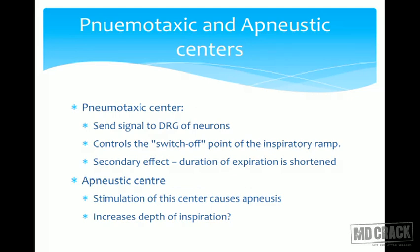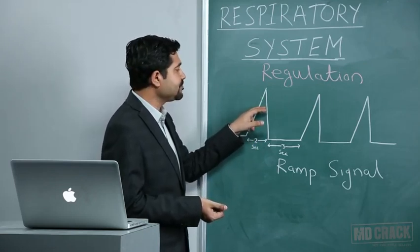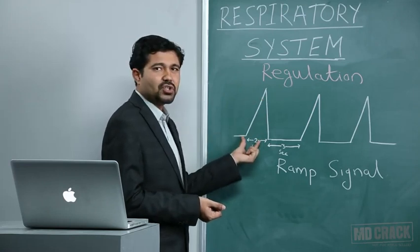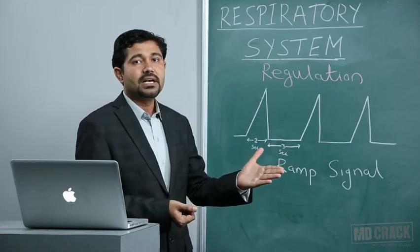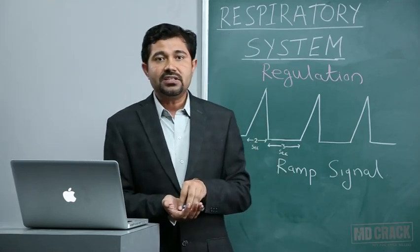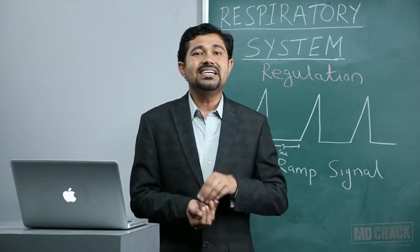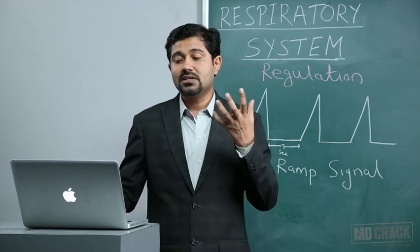The pneumotaxic center mainly increases the rate of respiration by causing early switch-off of the inspiration signal. If there is an early switch-off, the period of inspiration is shortened, and because of the secondary effect, even the expiration period is shortened, so the whole respiratory rate is increased. The apneustic center, as mentioned, increases the depth of respiration so that the person can inspire more forcefully.